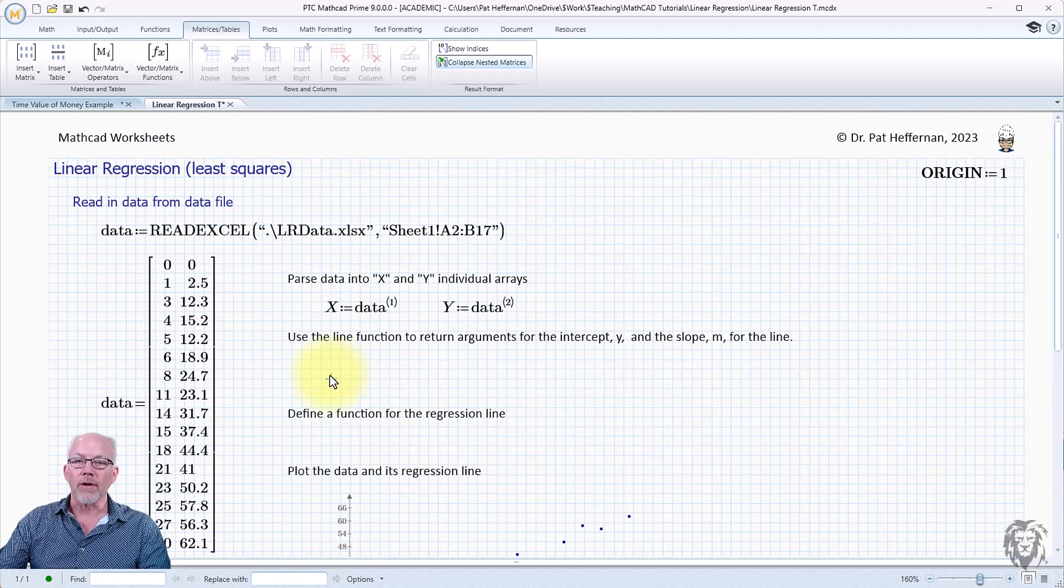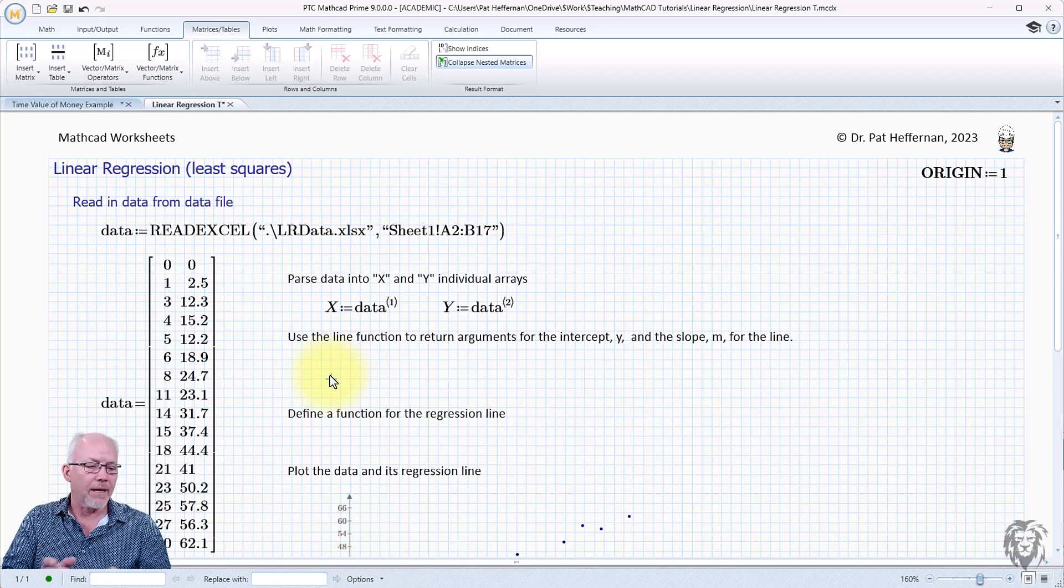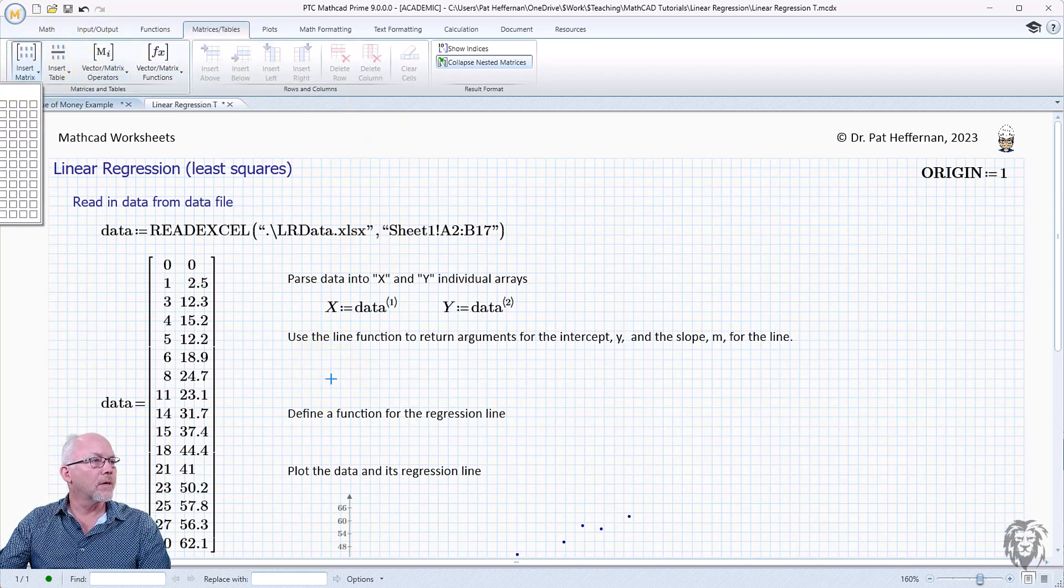So to get the regression line, there is a function called line within Mathcad, and we're going to use it. It returns an array of the fundamental parameters, so you get your intercept and your slope, and you get them in that order. Now, I did check the help file and everything else to try to identify which one's the slope, which one's the intercept, and it wasn't in there, but trust me, it's b and then m.